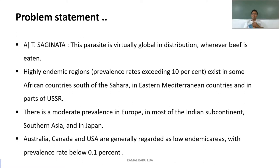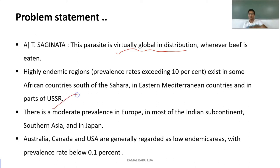Regarding Taenia saginata, this parasite is virtually global in distribution — found everywhere beef is eaten. In highly endemic areas, the prevalence rate exceeds 10%, particularly in African countries south of the Sahara, eastern Mediterranean countries, and some parts of the USSR. A moderate prevalence rate is observed in European countries, most of the Indian subcontinent, southern Asia, and Japan.